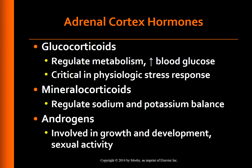The adrenal cortex hormones. There are three main classifications of adrenal cortex steroid hormones: glucocorticoids, mineralocorticoids, and androgens. Glucocorticoids regulate metabolism, increase blood glucose levels, and are critical in the physical stress response. The primary glucocorticoid is cortisol. Mineralocorticoids regulate sodium and potassium balance; the primary mineralocorticoid is aldosterone. Androgens contribute to growth and development in both genders and to sexual activity in adult women. The term corticosteroid refers to any one of these three types of hormones produced by the adrenal cortex.